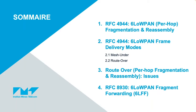Considering that we have seen the IPv6 and UDP headers compression of 6LoWPAN in our previous webinar talk, in this talk we are going to see three features of 6LoWPAN: IPv6 packet per-hop fragmentation and reassembly, the two frame delivery modes (mesh under and route over), issues with route over and per-hop fragmentation, and finally the 6LoWPAN fragment forwarding standard published in 2020, called 6LFF, where an intermediate node forwards a fragment without reassembly.